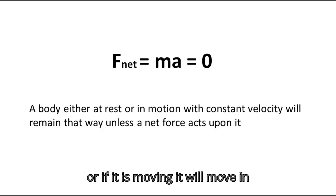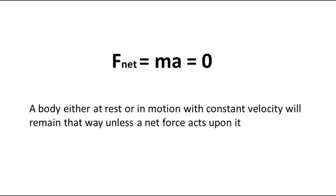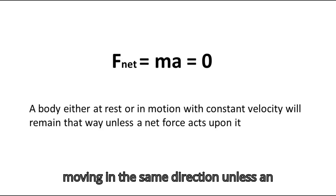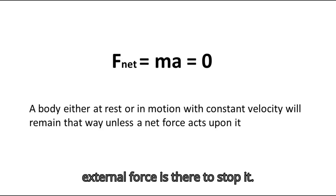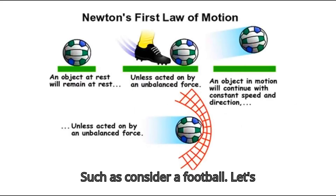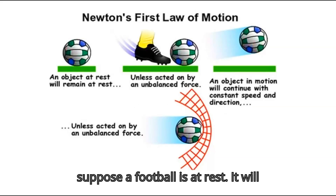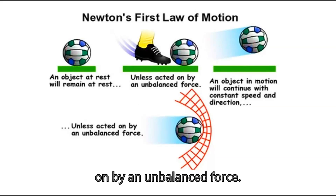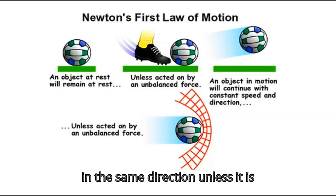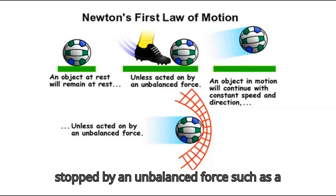When no external force acts on a body, it will stay at rest, or if it is moving it will continue in constant motion. For example, consider a football at rest — it will remain at rest unless acted on by an unbalanced force. If it starts moving, it will move at a constant speed in the same direction unless stopped by an unbalanced force.